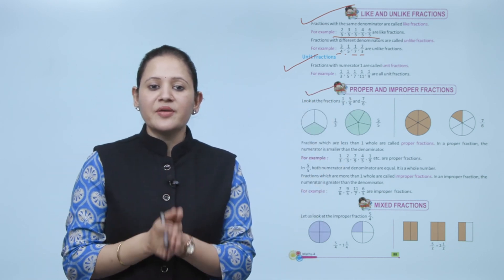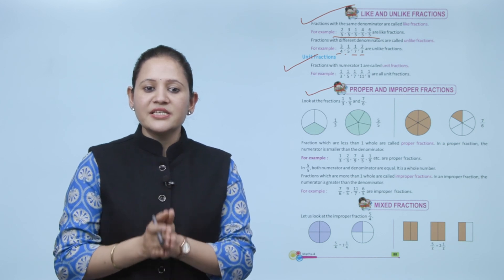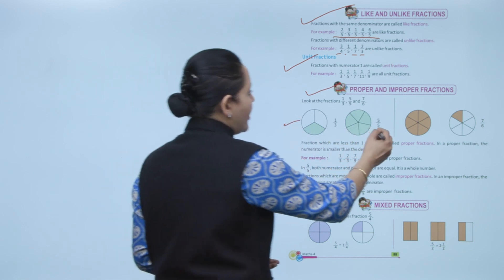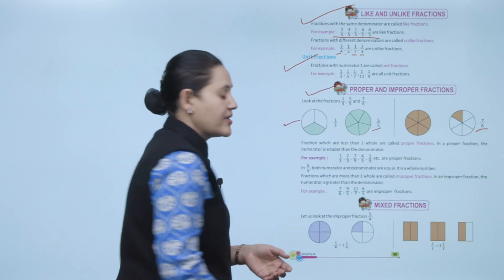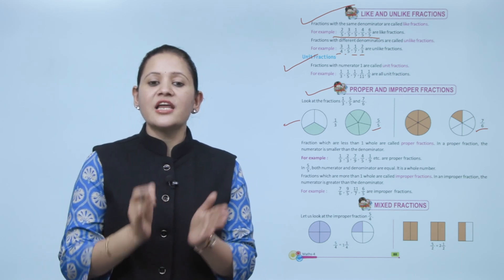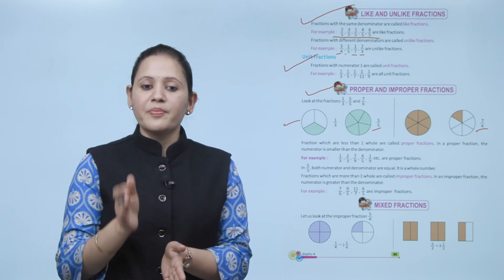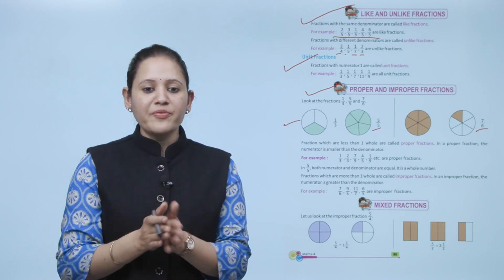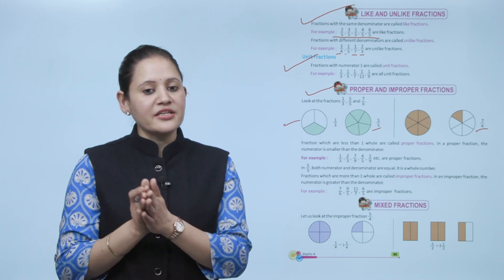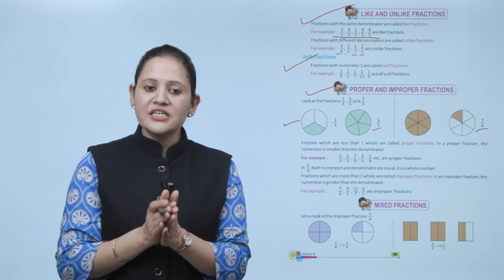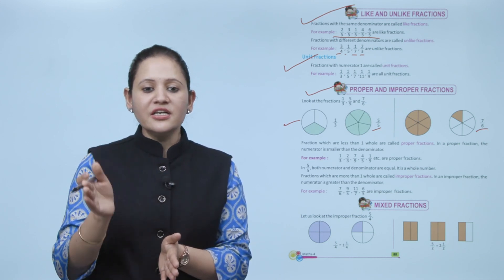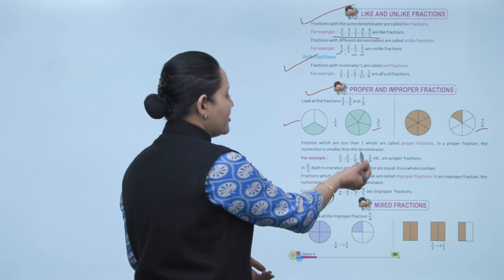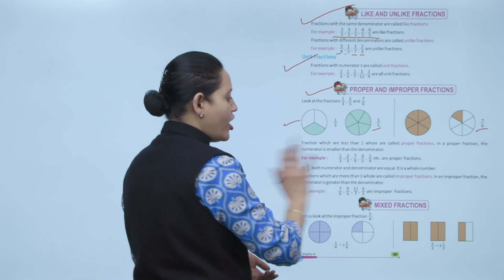Look at the fractions 1 by 3, 5 by 5, and 7 by 6. Fractions which are less than 1 whole are called proper fractions. In a proper fraction, the numerator is always smaller than the denominator. For example: 1 by 3, 2 by 3, 7 by 9, 4 by 5, 1 by 9 — all are proper fractions because the numerator is less than the denominator.